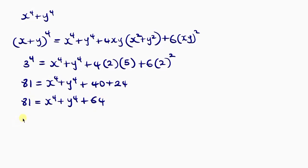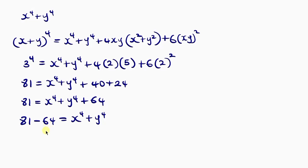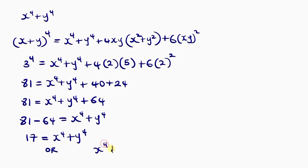When I move 64 to the left side, it becomes 81 minus 64, equal to x to the power 4 plus y to the power 4. 81 minus 64 gives us 17. So x to the power 4 plus y to the power 4 equals 17, which is what the question asked us to find.